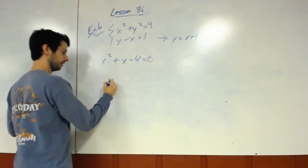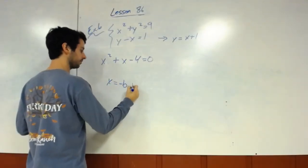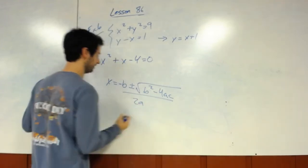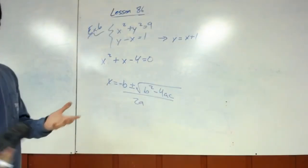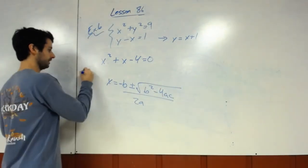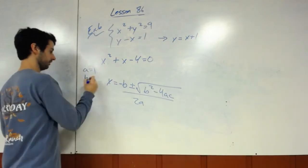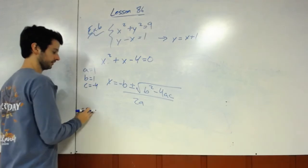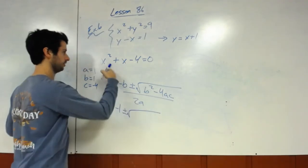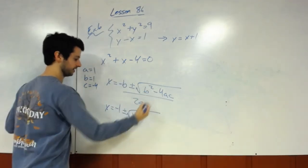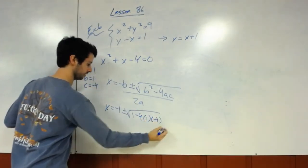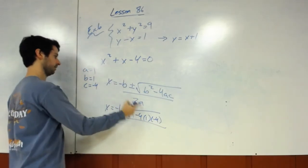Remember, x equals negative b plus or minus square root b squared minus 4ac all over 2a. So we've got to resort to using the quadratic formula, or you could totally use completing the square. We're going to use this one. So, x equals... Plug all those in. So, x equals negative 1 plus or minus 1 squared is 1 minus 4a is 1. c is negative 4 all over 2 times 1, so 2.